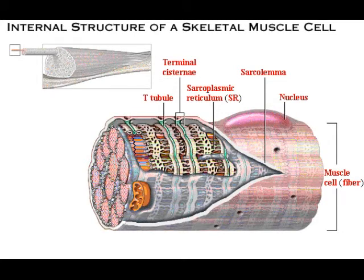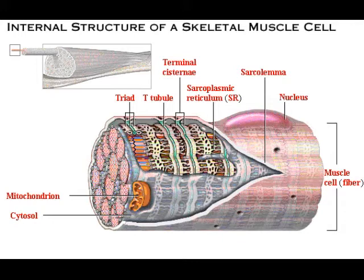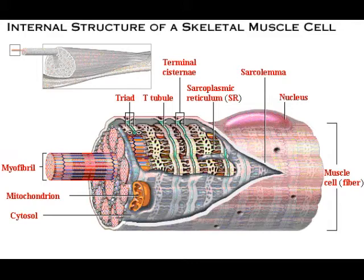T-tubules are invaginations of the sarcolemma projecting deep into the muscle cell's interior. Note the visible T-tubule openings on the surface of the sarcolemma. A triad is a three-unit group consisting of one T-tubule lying between two adjacent terminal cisternae. The cytosol is the intracellular fluid in which the organelles are suspended. Mitochondria are cytoplasmic organelles that are sites of ATP synthesis, referred to as the powerhouses of the cell. A myofibril is a cylindrical bundle of contractile filaments within the skeletal muscle cell. To review any of these terms, click on the bold red words.